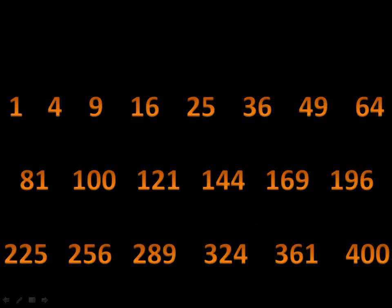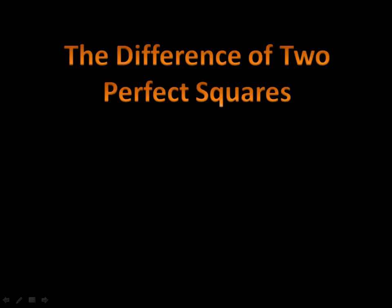Suppose you have a binomial that contains perfect squares. Actually, more specifically, it contains a difference of two perfect squares. In other words, we have something that looks like x squared minus 25.